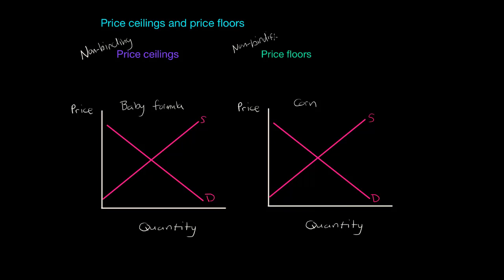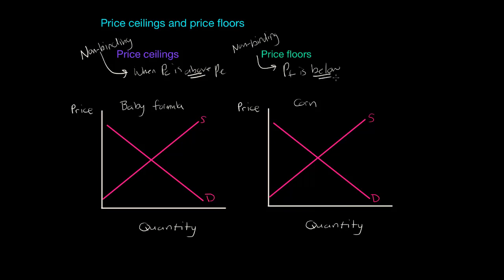What does non-binding mean? Non-binding means a price ceiling is set above equilibrium. Or when a price floor — that's PF — is below PE, the equilibrium price.